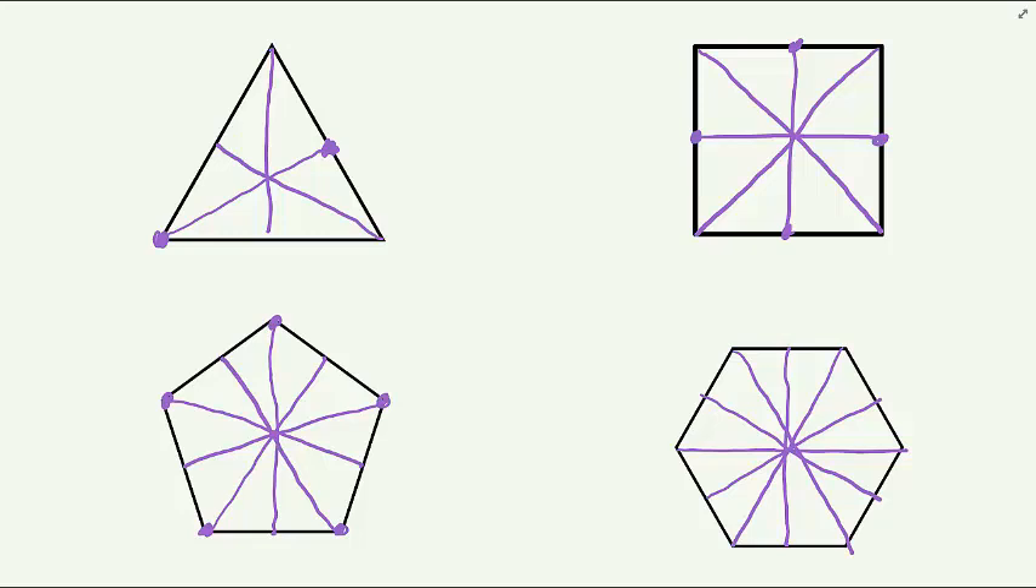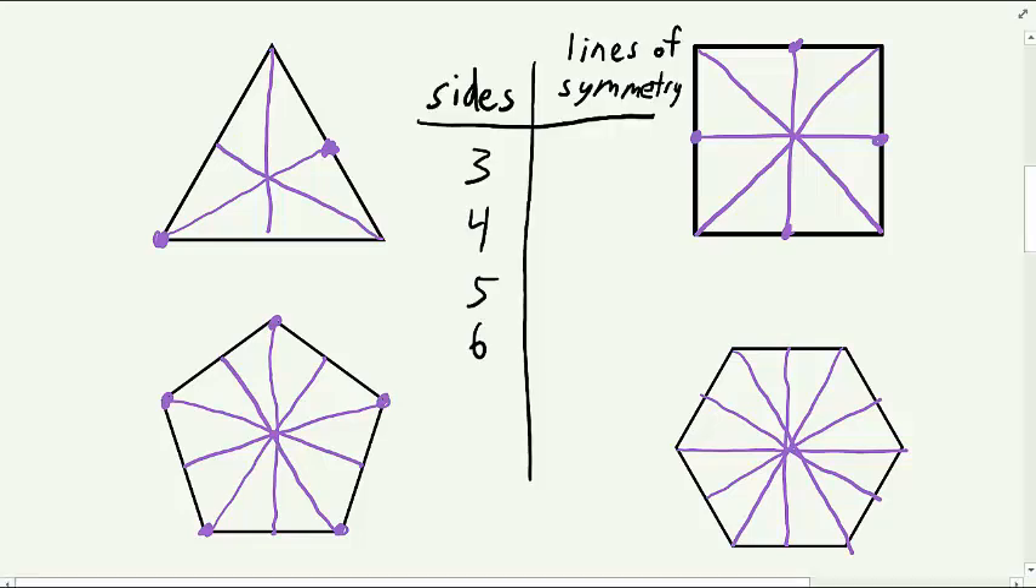Let's see how these two different situations affect the number of lines of symmetry that these regular polygons have. The equilateral triangle had three lines of symmetry. The square had four lines of symmetry.